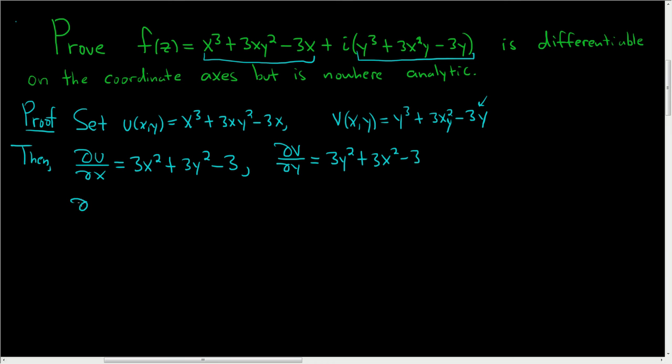Now we'll compute ∂u/∂y. ∂u/∂y, well this derivative is going to be 0, this one is 0, so we're going to get 6xy. And then ∂v/∂x, that's simply going to be 6xy also.